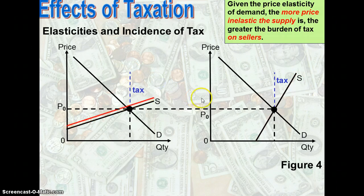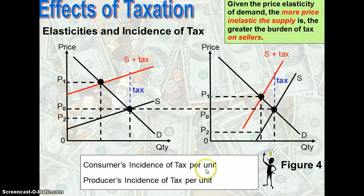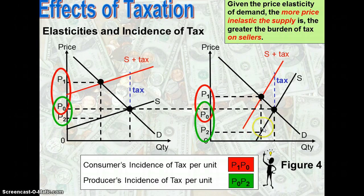If the same amount of tax is imposed on both diagrams, the supply curve shifts up by the amount of tax imposed, with the new equilibrium price at P1 for both diagrams. P2 is the point on the original supply curve. The consumer incidence of tax per unit is shown by the distance P1 to P0. The producer incidence of tax per unit is denoted by the distance P0 to P2, shown in the green area. With a more price inelastic supply curve — as in the diagram on the right — the burden of tax on the seller is greatest, as seen by comparing the distance P0 to P2 between the two diagrams.